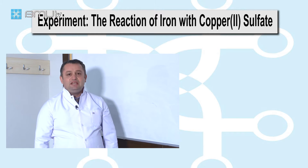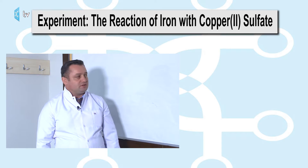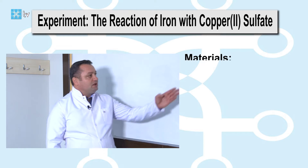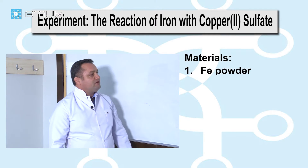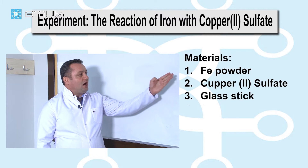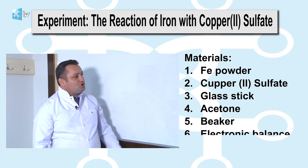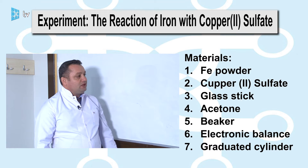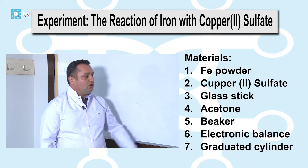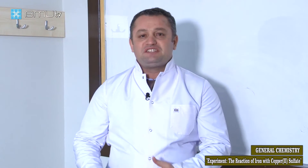For this experiment we need some apparatus, equipment, and materials. We need copper sulfate at 0.1 mol, iron powder, acetone, a wash bottle, a beaker, a graduated cylinder, and an electronic balance. We will use these materials during this experiment.